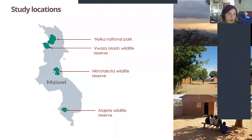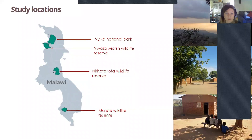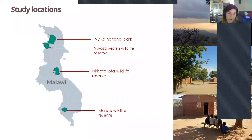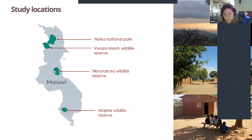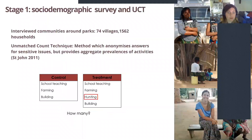In terms of locations, I looked at four different protected areas in Malawi. Those are Nika National Park and Vwaza Marsh Wildlife Reserve, both located in the north and managed by the Government of Malawi — relatively under-resourced and largely unfenced. This is quite different from the other two protected areas, Nkhotakota and Majete, which are managed by the international NGO African Parks in a delegated co-management scheme and have received a lot more financial investment over the past ten years.